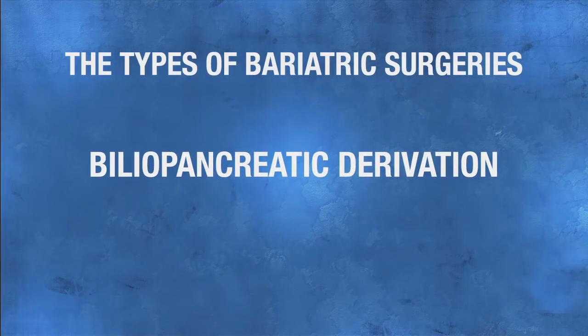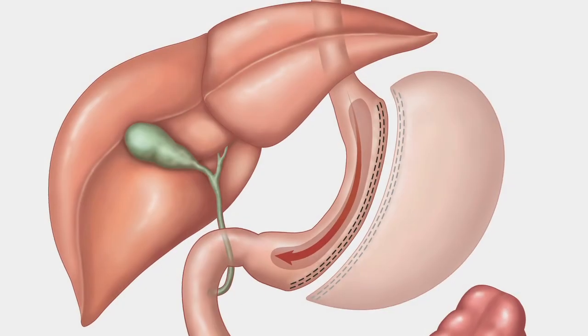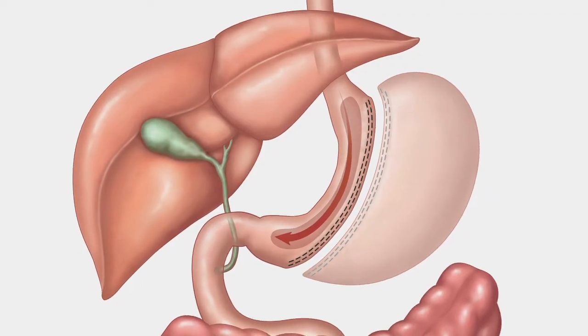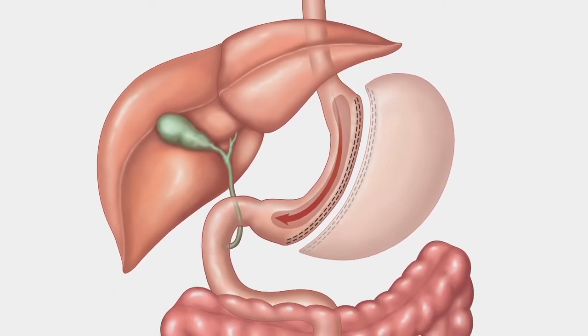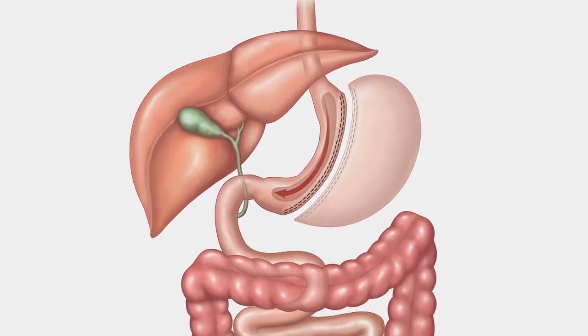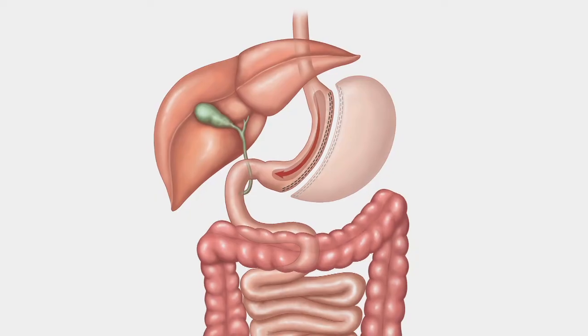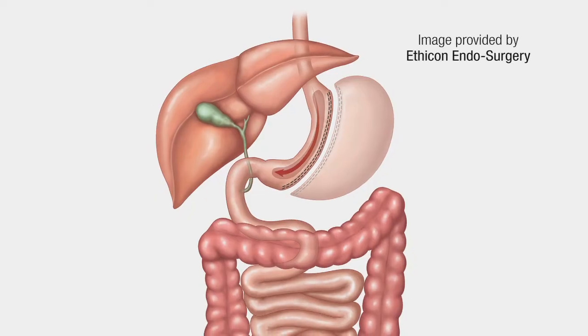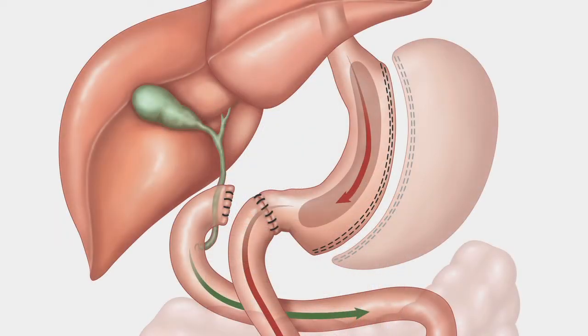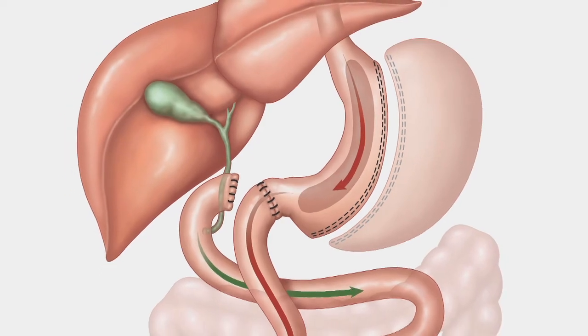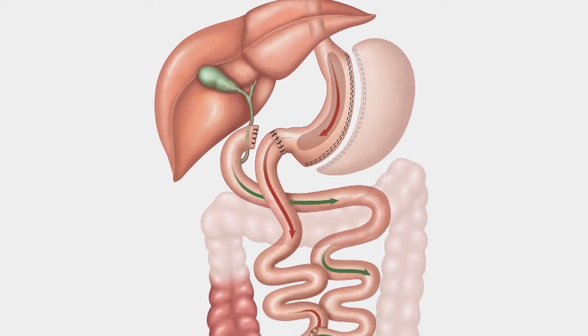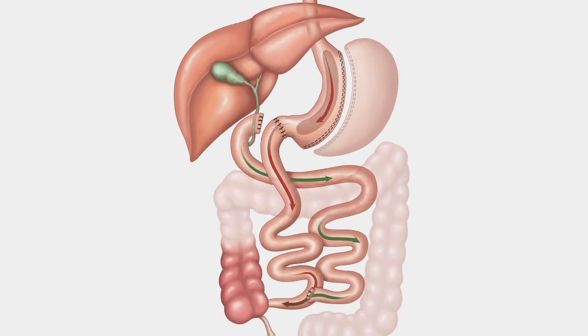Biliopancreatic derivation involves two weight loss mechanisms: restriction and malabsorption. The stomach is sectioned to create a stomach in the shape of a banana. This new stomach holds about 220 cc or 8 ounces, a reduction of about 50% of your stomach. The other part of the stomach is removed. New connections are made with the small intestine and only half of the small intestine is used for passing food, resulting in a reduction in food absorption. This is the malabsorptive aspect and the primary weight loss mechanism in this procedure.